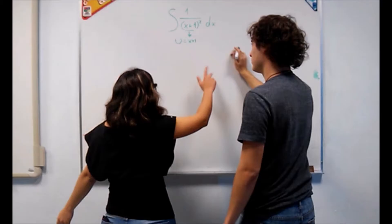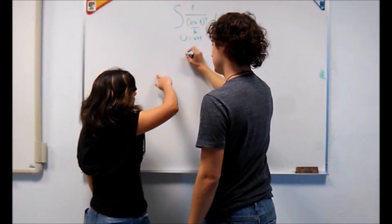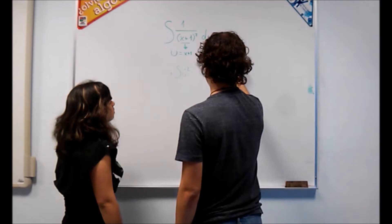We are going to set u equal to x plus 1. Our integral is going to be the integral of 1 divided by u squared. Then we are going to rewrite the u as u to the negative 2.